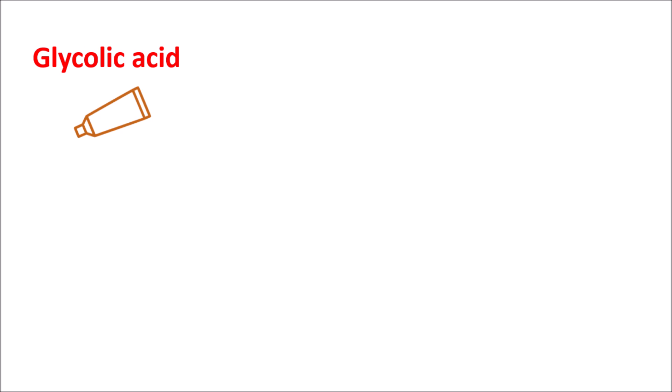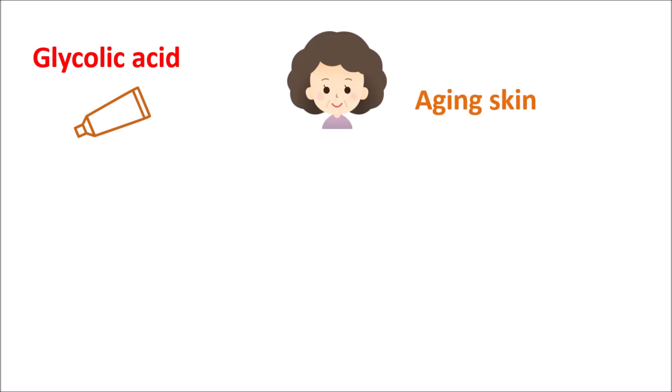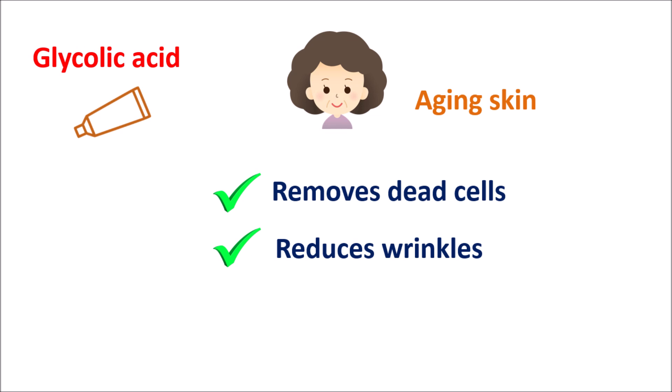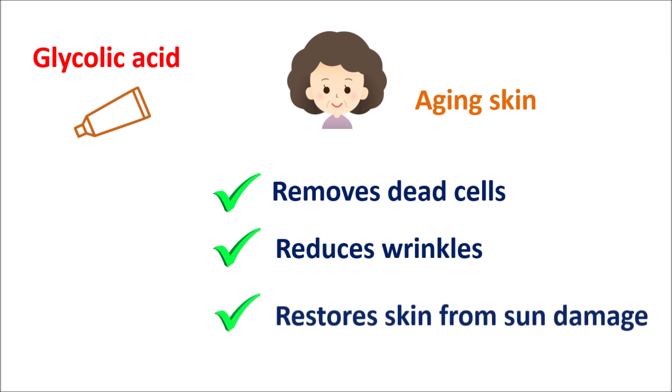Glycolic acid is mainly used for conditions like aging of the skin, where along with aging we can observe wrinkles and darkening of the skin. It acts as an exfoliating agent, removing dead cells accumulated on the surface layers. It can reduce wrinkles, producing a de-aging effect on the skin structure, restore the skin from sun damage, and remove dark spots.